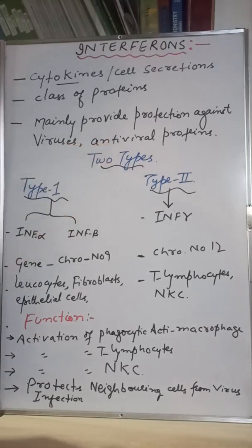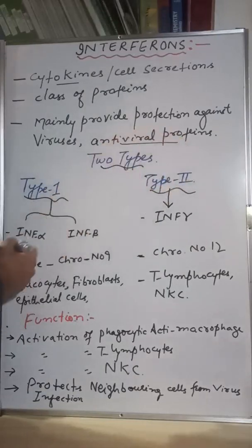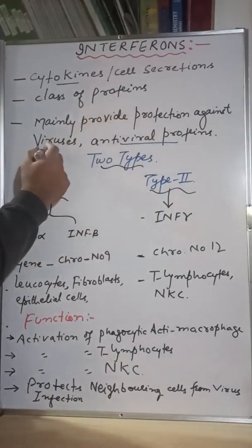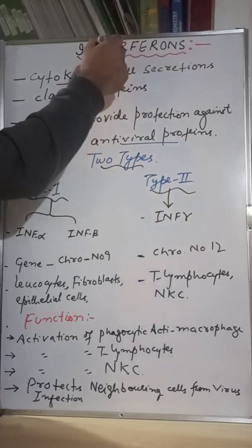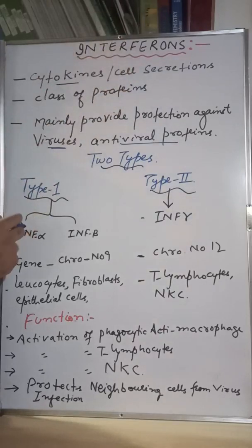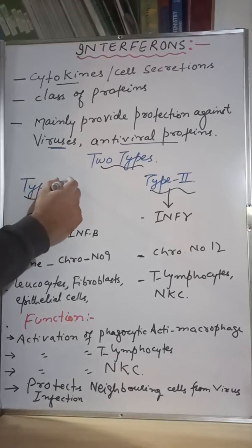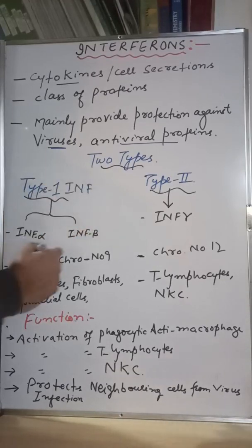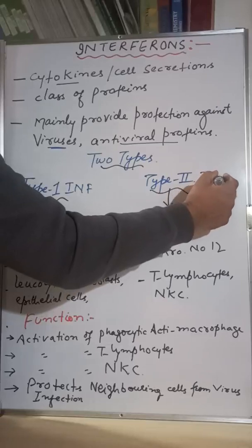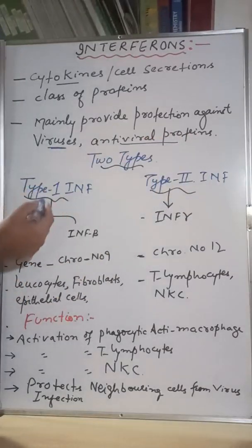This class of proteins, interferons, protects and gives immunity mainly against viruses. That is the reason you sometimes call them antiviral proteins, because they primarily provide protection against viruses. Now, coming to the classification, there are two types of interferons: Type 1 interferon and Type 2 interferon.